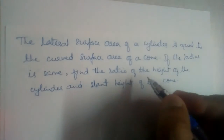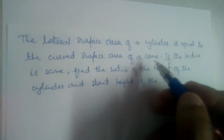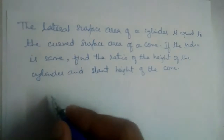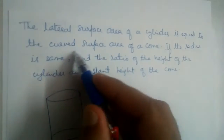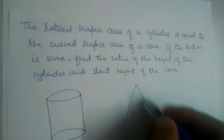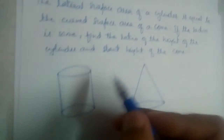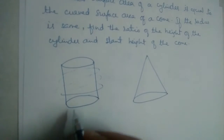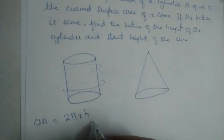The lateral surface area of a cylinder is equal to the curved surface area of a cone. We have two diagrams here — a cylinder and a cone. The lateral surface area of the cylinder is this part, not the top and base, so it is 2πrh.